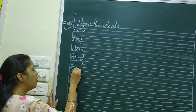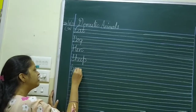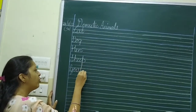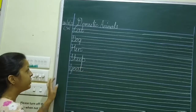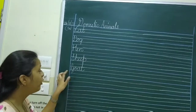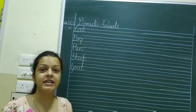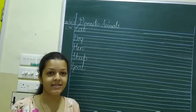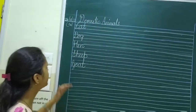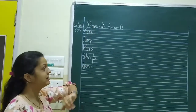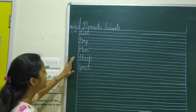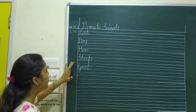G-O-A-T. Goat. Sheep gives us wool and goat gives us milk. So today we have learnt domestic animals — cat, dog, hen, sheep, goat.